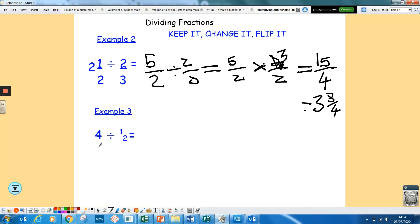Again, dividing with a whole number. Just make that 4 over 1, and then keep it, change it, flip it, which would end up being 8 over 1 when you multiplied it, which is just 8.